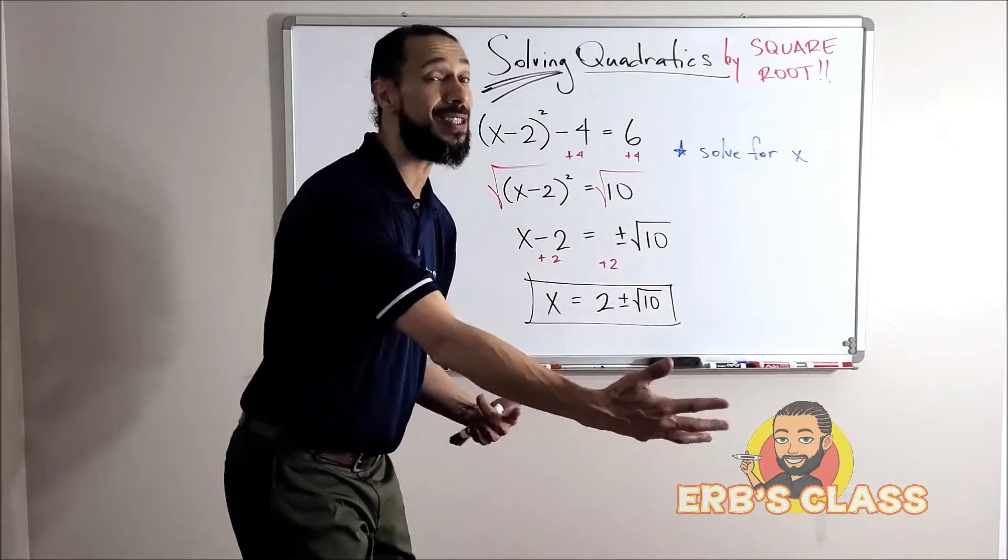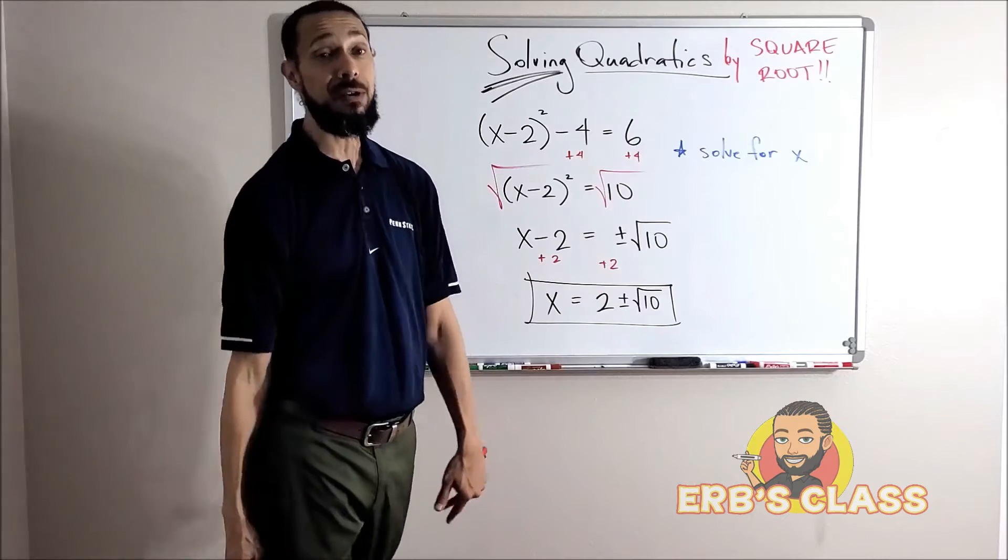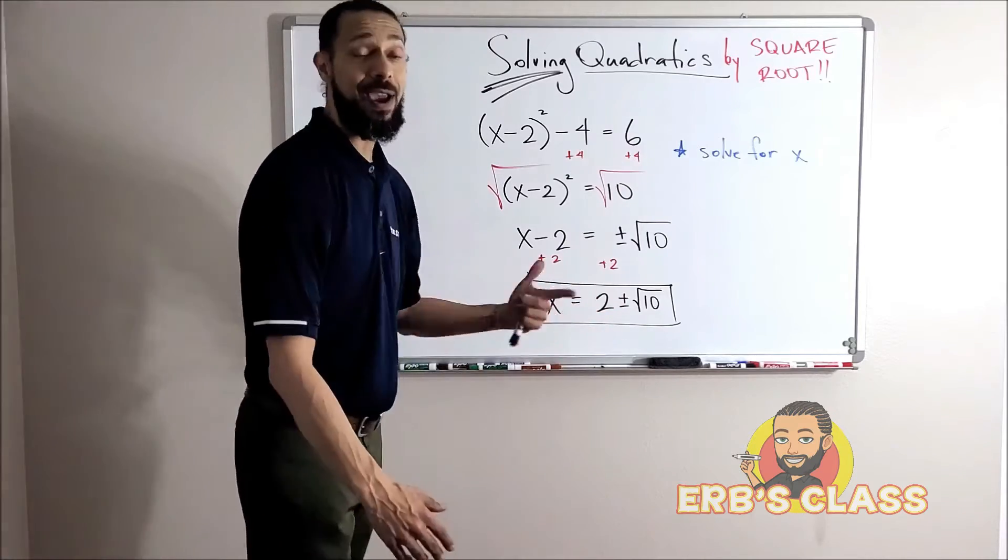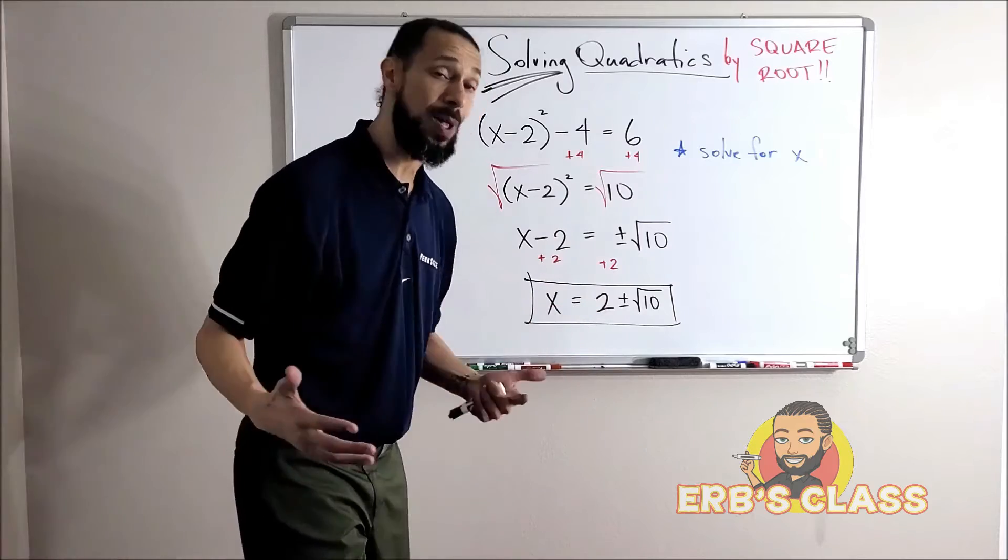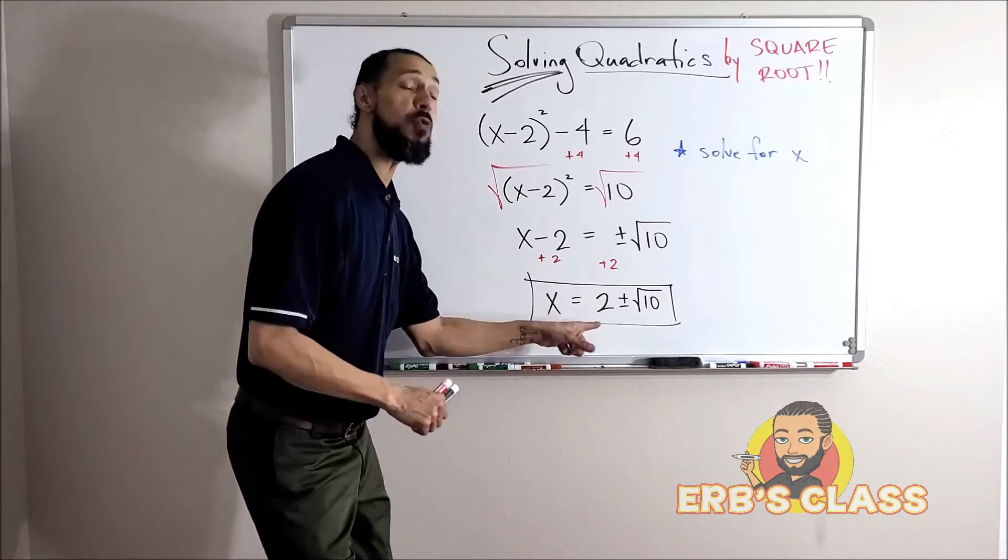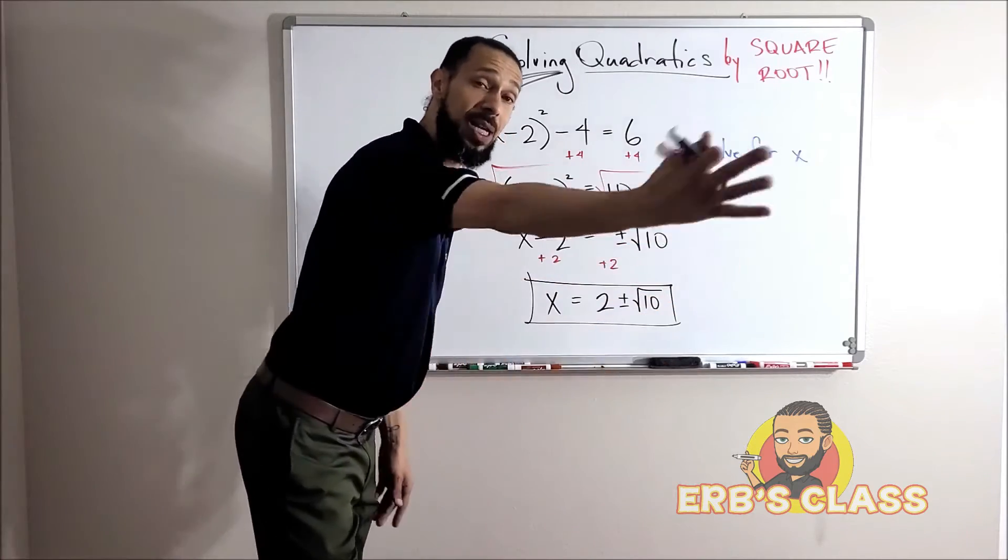Now, our numbers were very pretty before, we had whole numbers like 2 and positive 2, negative 2 and negative 6. All our answers are not going to be pretty all like that all the time. Sometimes your answer is going to look like this. Now if I wanted to plug it into my calculator and get a decimal, I totally could. I would do 2 plus the square root of 10, get some decimal, and I would also do 2 minus the square root of 10, get a different decimal.